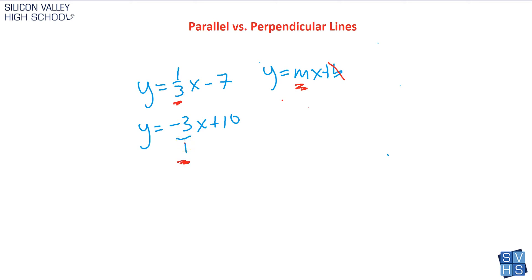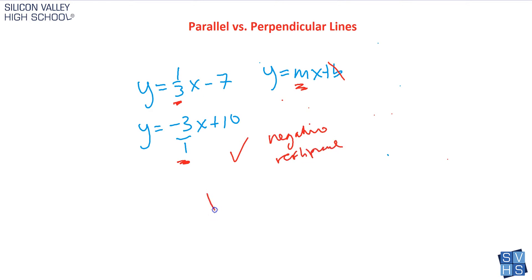So we have 1/3 and negative 3/1. These are flipped versions of each other — reciprocals — and they also have different signs. That means these are negative reciprocals of one another, so yes, these are perpendicular lines. They are not parallel; the slopes are not the same. They're flips of each other and opposite in sign, so this pair is perpendicular.